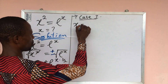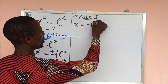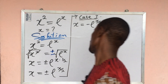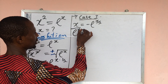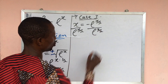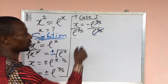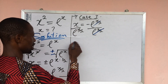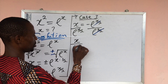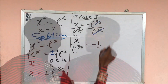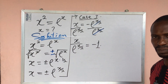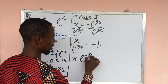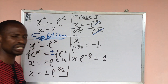Case 1: x equals negative e to the power of x over 2. The first thing we do is divide both sides by e to the power of x over 2. This gives us x divided by e to the power of x over 2 equals negative 1. We can rewrite this using the law of indices as x times e to the power of negative x over 2 equals negative 1.